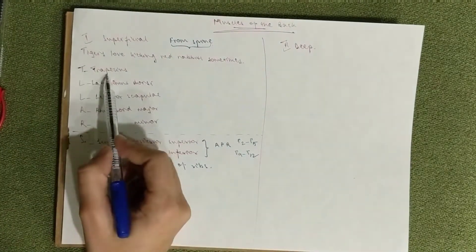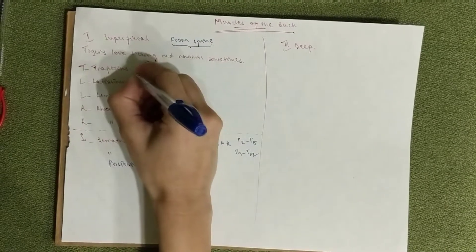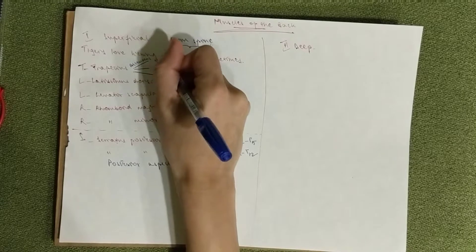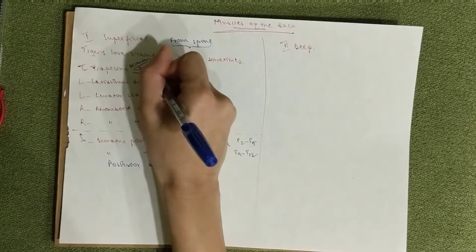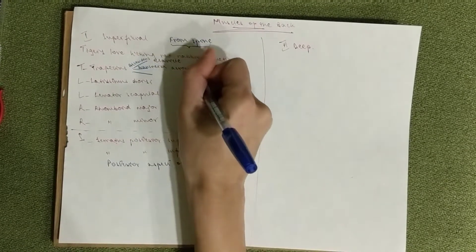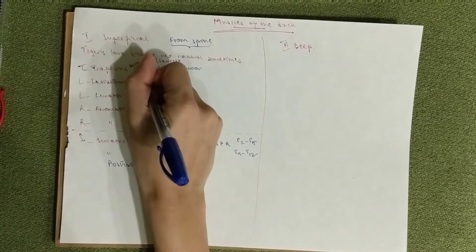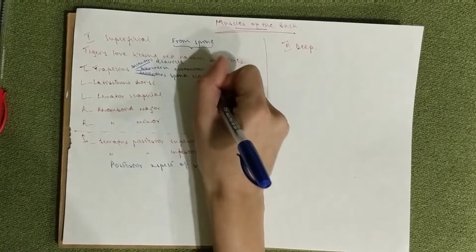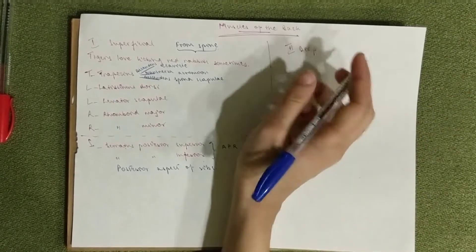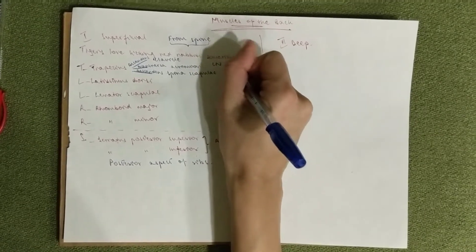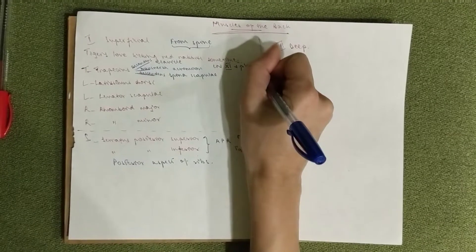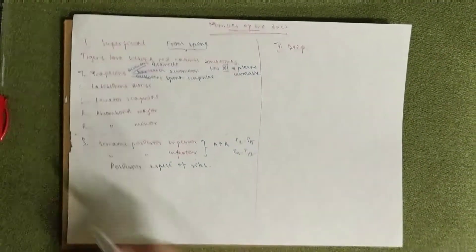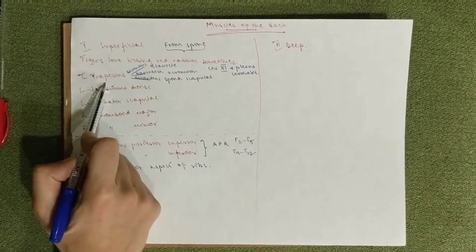The trapezius has three parts. It's got a pars ascendans that goes to the clavicle, a pars transversalis which goes to the acromion, and a pars descendans that goes to the spina scapulae. It is innervated by cranial nerve number 11, which is the accessory nerve, and the plexus cervicalis C2 to C4. It goes from the nuchal line on the base of the cranium.